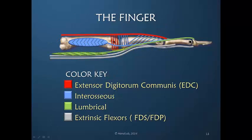I'd like to introduce this schematic drawing, which you will see repeatedly throughout this and other presentations. You will see a fairly accurate representation of the bones, but these shapes represent the various muscle influences. Consistent throughout this presentation we will use red to represent the extensor digitorum communis influence, blue to represent the interosseous muscles, and green to represent the lumbrical, while we will use a silver or gray color to represent the extrinsic flexors. This way when you're looking at this schematic drawing you can appreciate which muscle is having the influence.